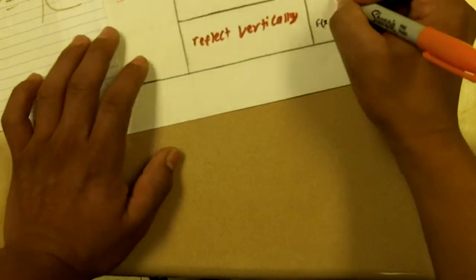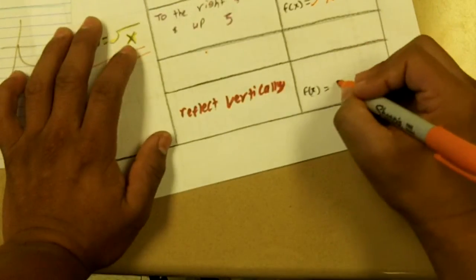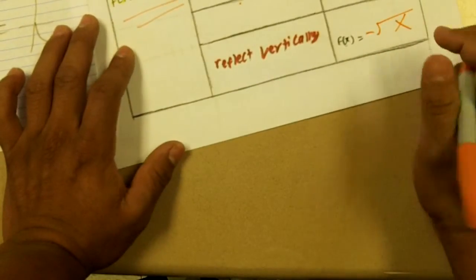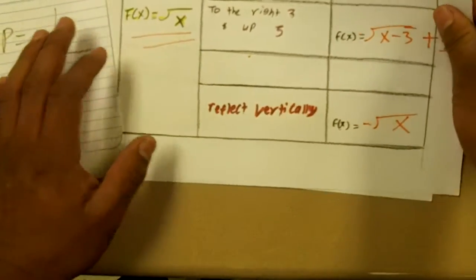And then for this one here, to reflect it vertically, you put a negative in front of the whole equation. And if it was horizontal, you put it just in front of the x. But that's all.